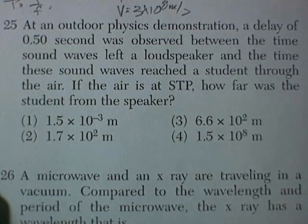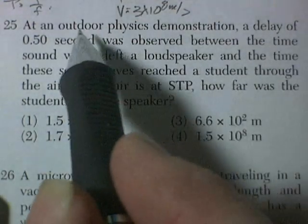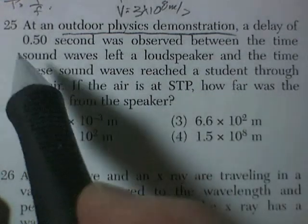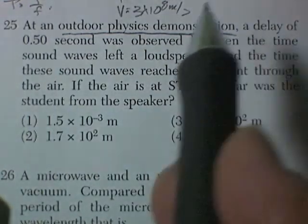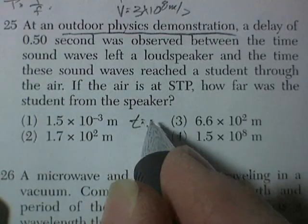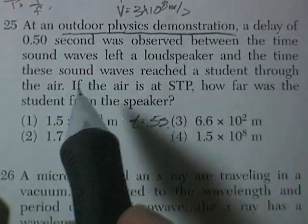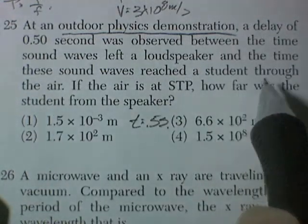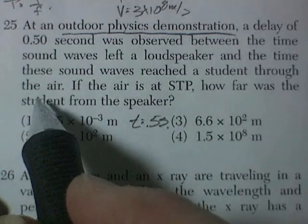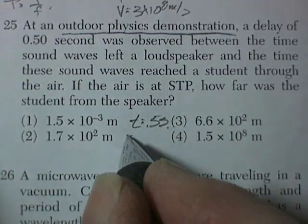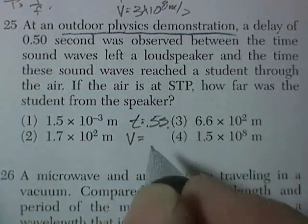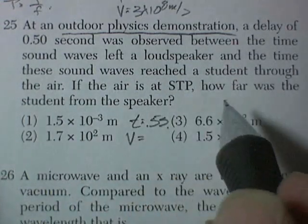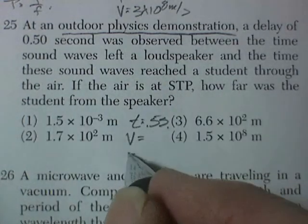Question 25, in an outdoor physics demonstration, yeah, I live up in upstate New York, that'll happen. A delay of half a second was observed between, so the time is 0.5 seconds, was observed between the time the sound waves left a loudspeaker and the time those sound waves reached a student. So the velocity of sound is something I can look up. The air is standard temperature and pressure. How far was the student? So I'm looking for distance.